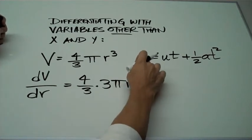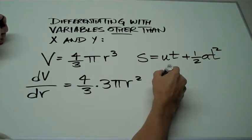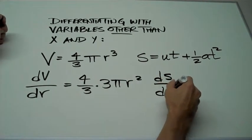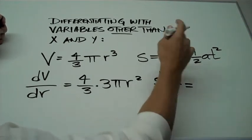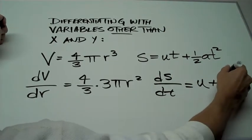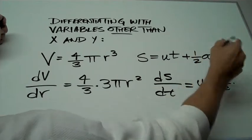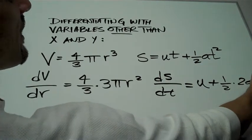And here, if I have s with respect to t, it would be dS/dt is equal to, well, that's a 1, so that makes that u plus 1 half times 2 times a t to the 1.